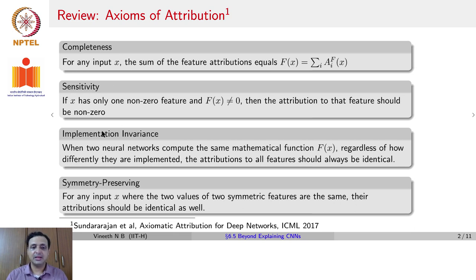Another axiom is implementation invariance. When you have two neural networks that compute the same mathematical function F(x), regardless of how differently they are implemented, the attributions to all features should always be identical.